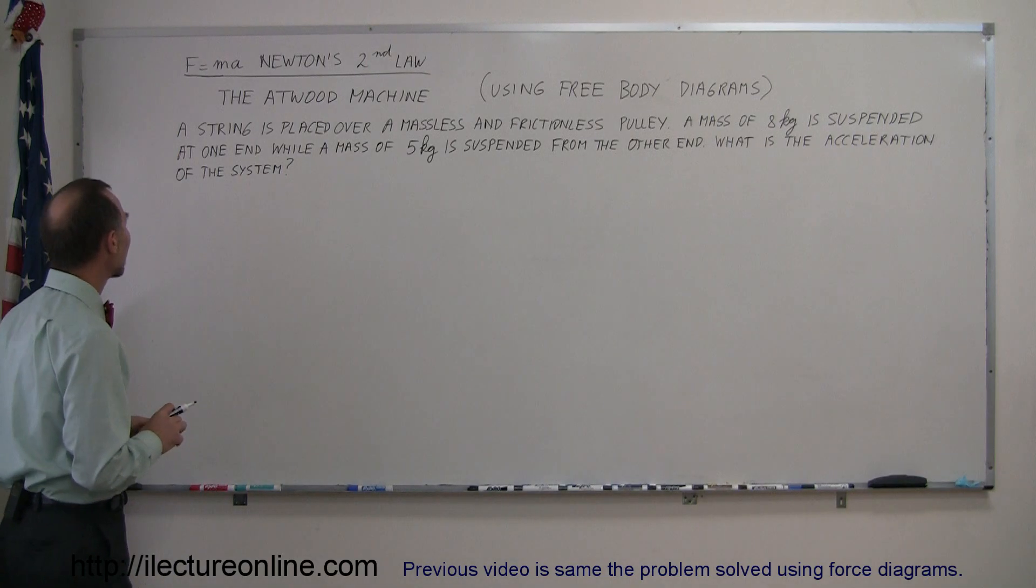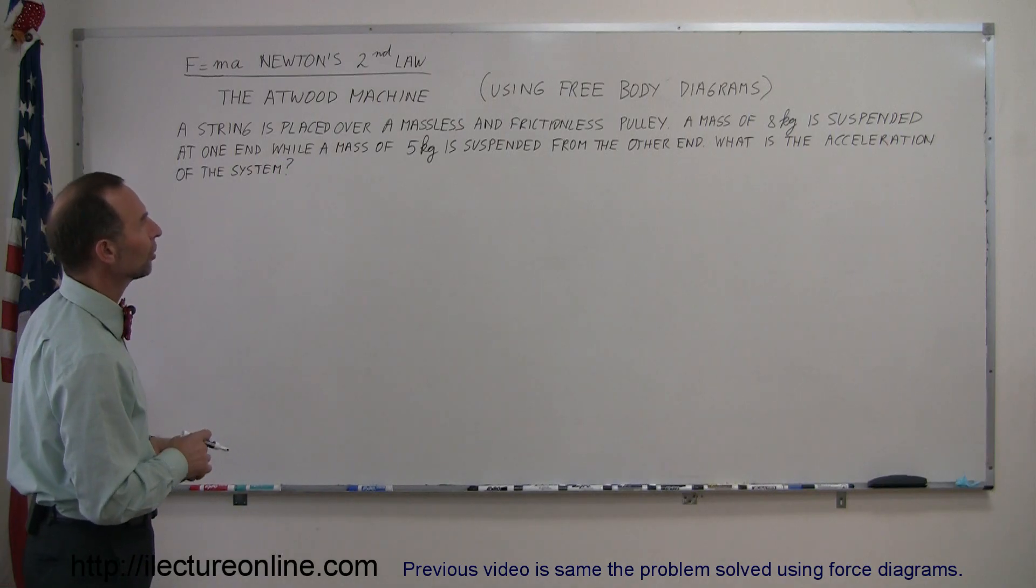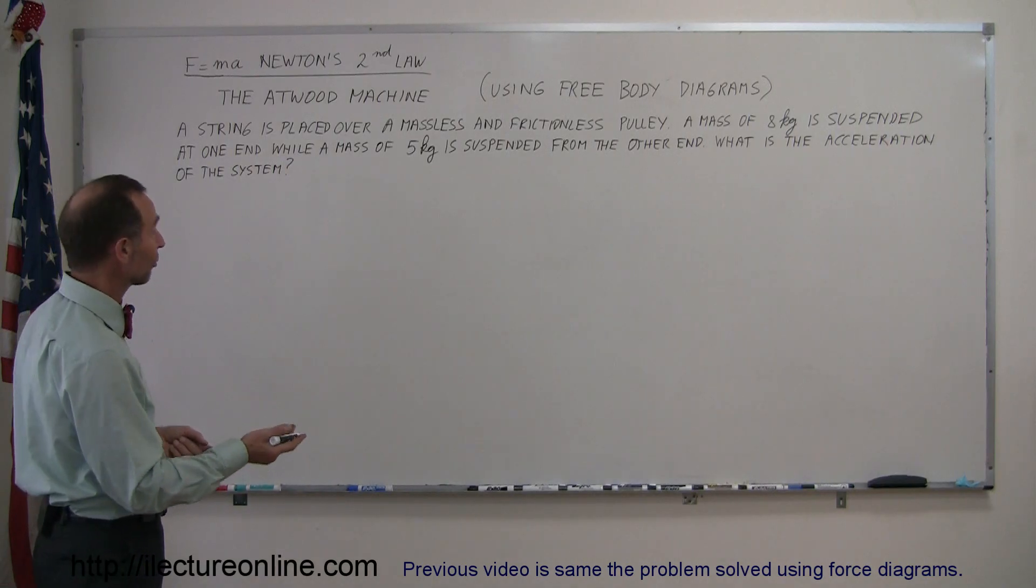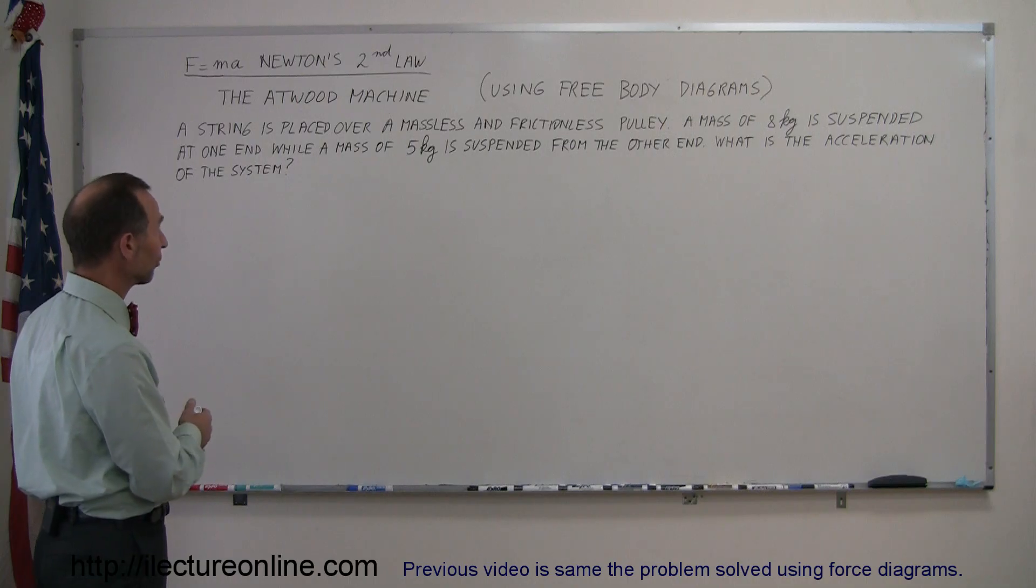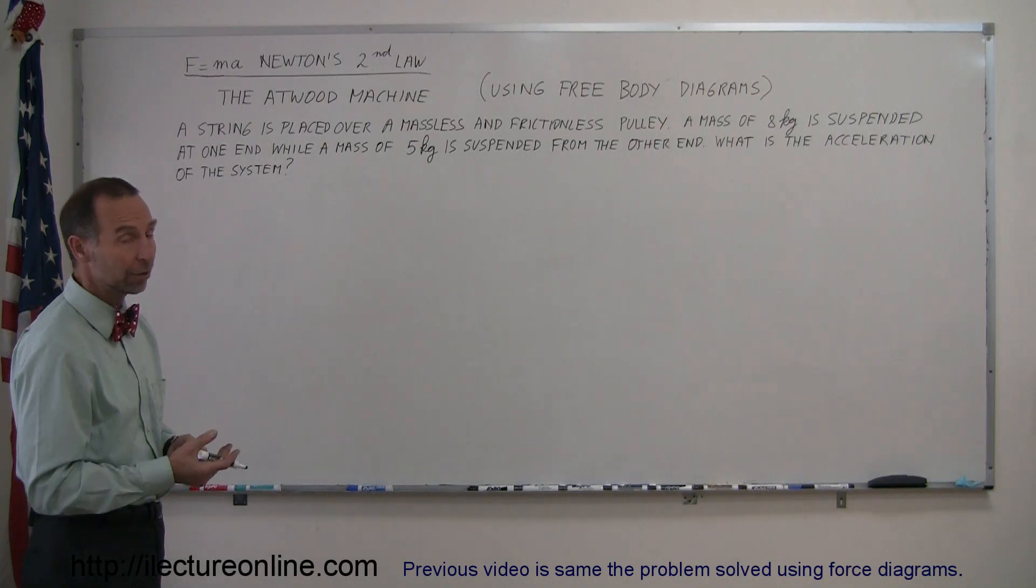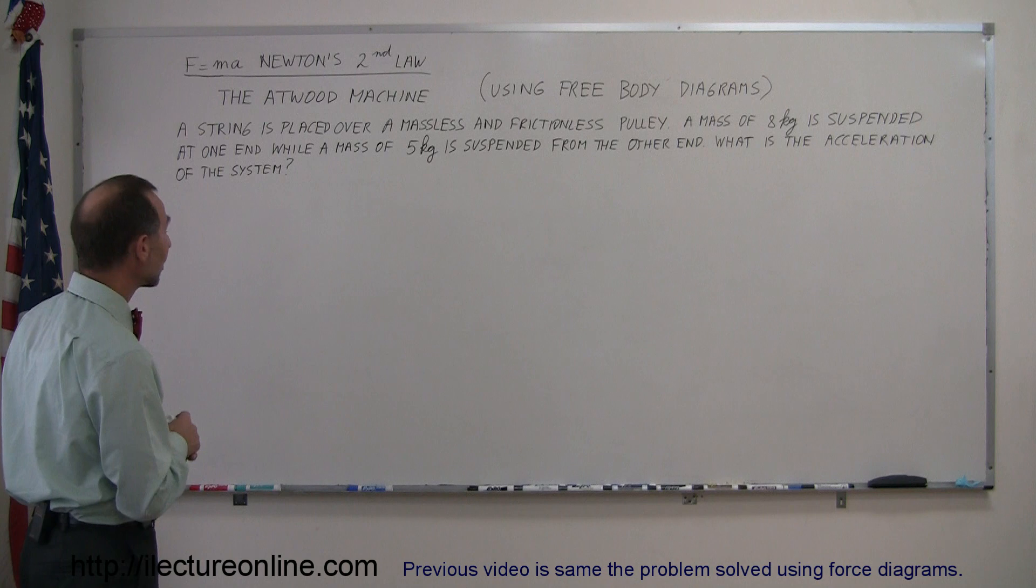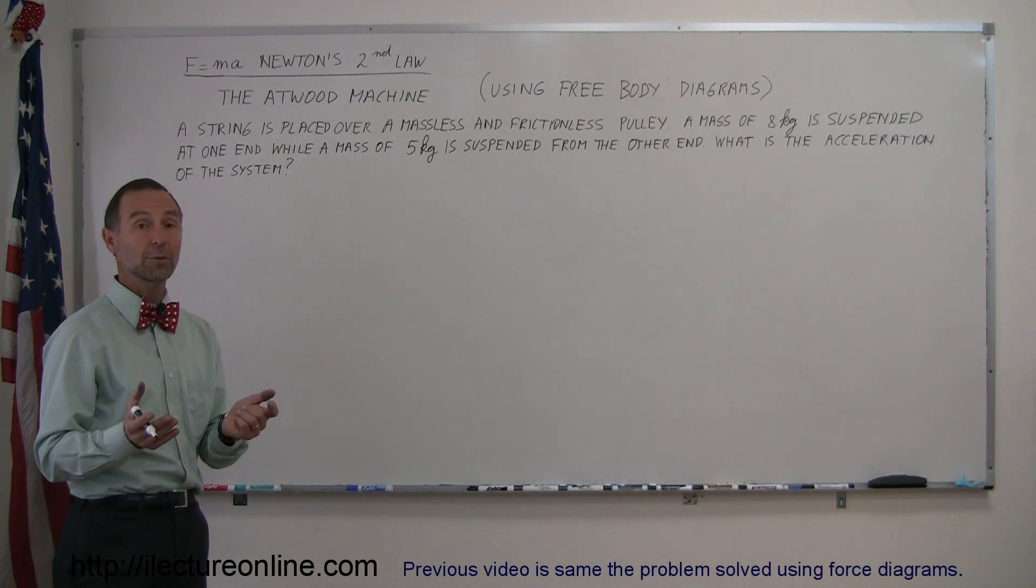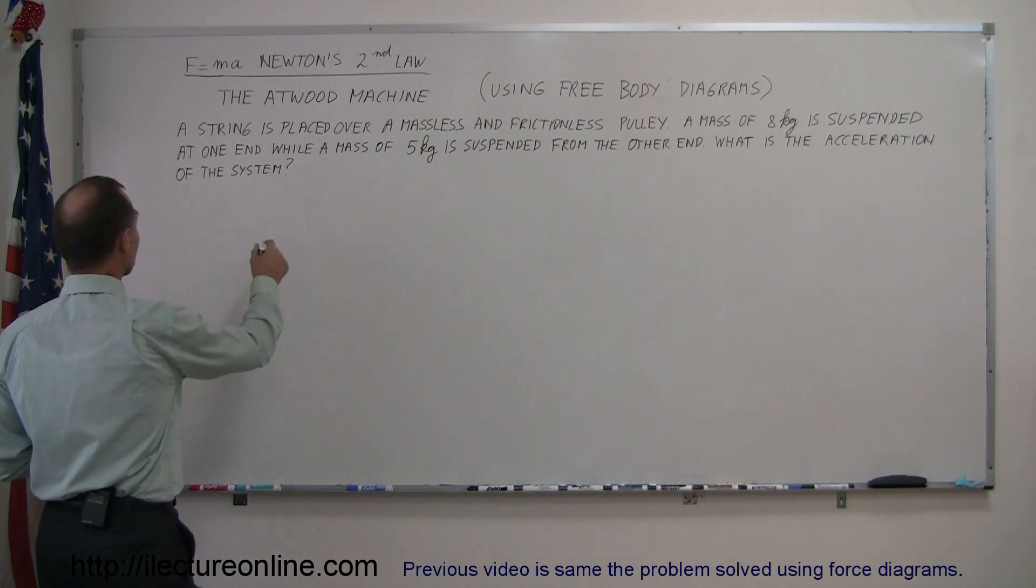We have a string that is placed over a massless and frictionless pulley. A mass of 8 kilograms is suspended at one end, while a mass of 5 kilograms is suspended from the other end. What is the acceleration of the system? The first thing you want to do is draw a diagram of what's going on.